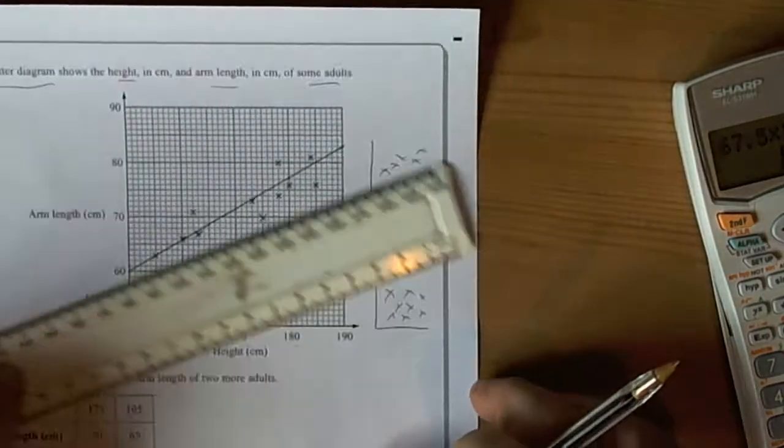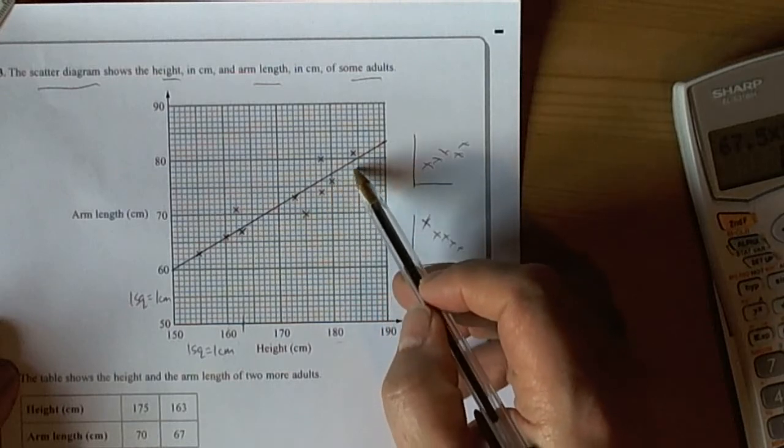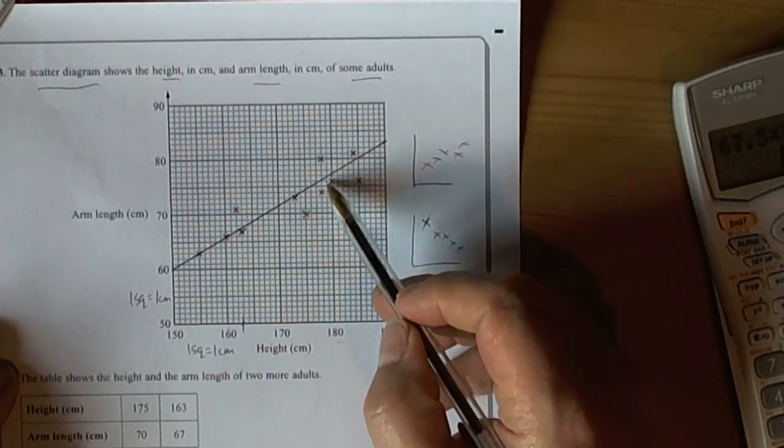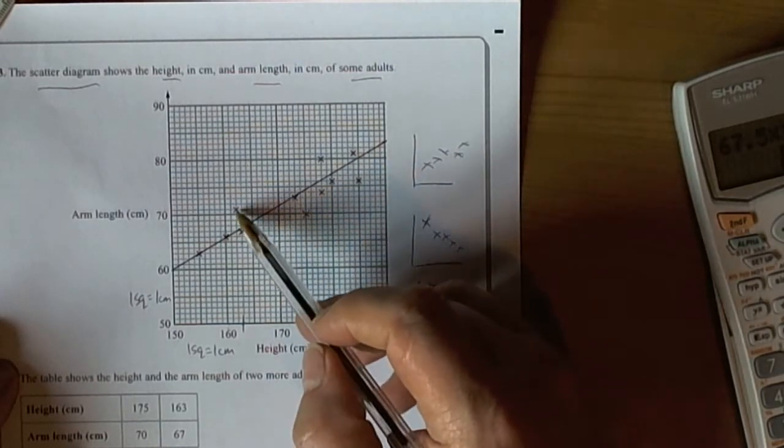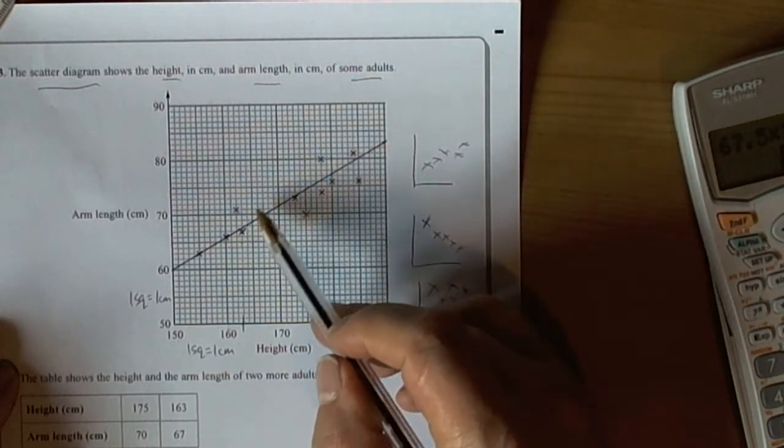Such that we can see that there's roughly the same kind of distances from the crosses to the line from underneath the line as there is from the crosses above the line. So roughly around the same number of crosses is the usual good guide.